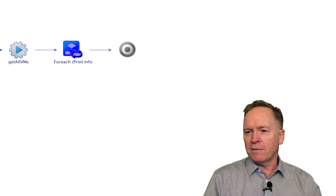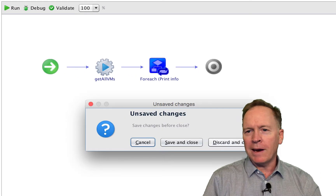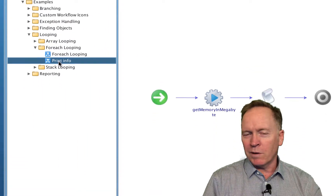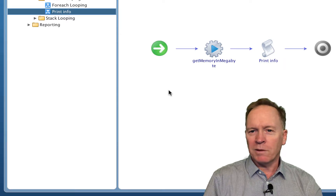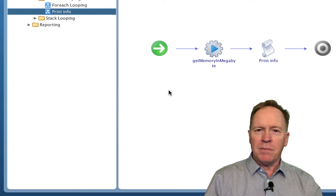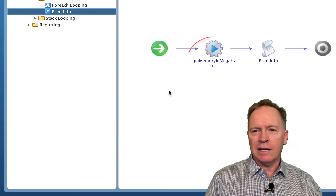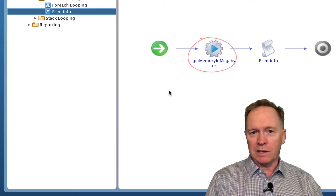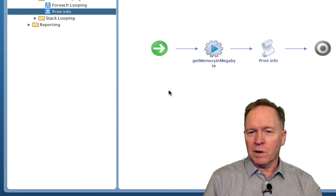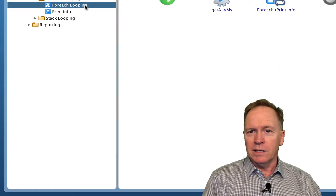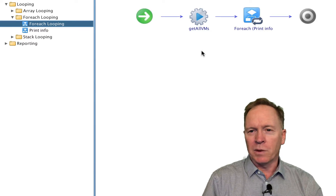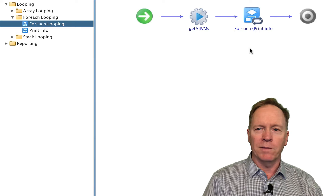If I quit out of this current workflow and discard any changes, here's the other workflow that we're calling — a simple little workflow called printinfo. All this workflow does is take one VM at a time, pass that VM into an action that gets the amount of memory in that virtual machine, and then log that information. The interesting stuff in this video is taking place in the main workflow, which uses the FOREACH schema element to call the other workflow repeatedly.